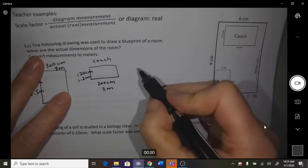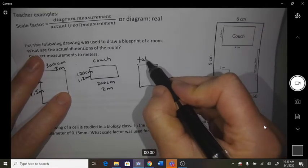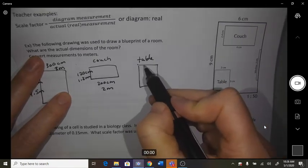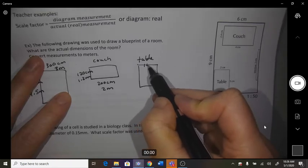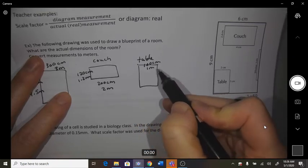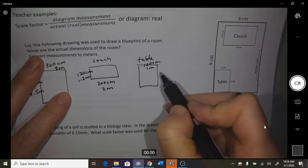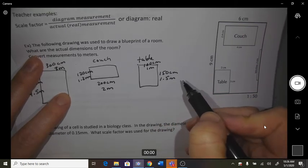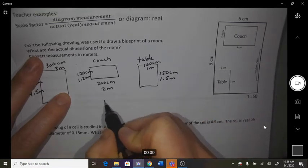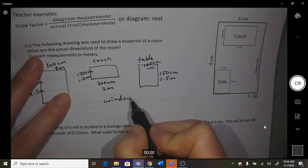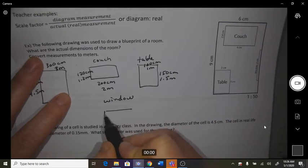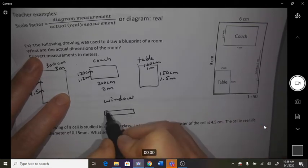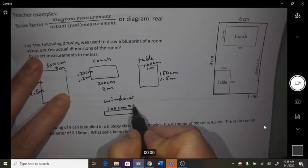The table, if you do 2 times 50, that's 100 centimeters, or 1 meter, and 3 times 50 is 150 centimeters, 1.5 meters. And the window, it was 2 centimeters, so 2 times 50 is 100 centimeters, so it's 1 meter wide.